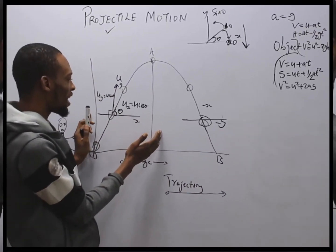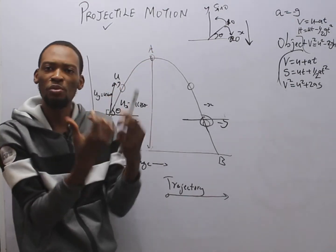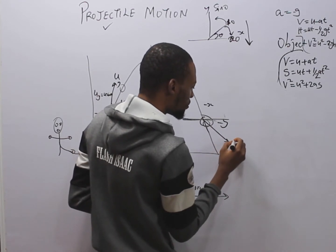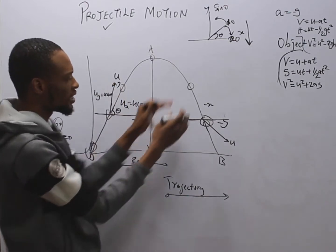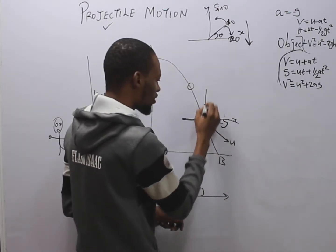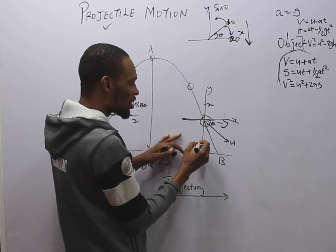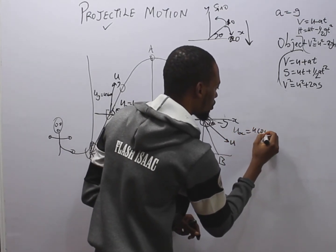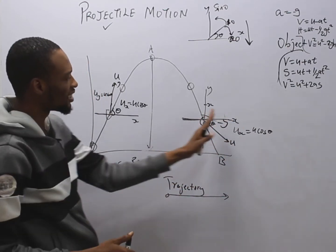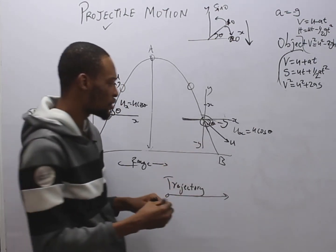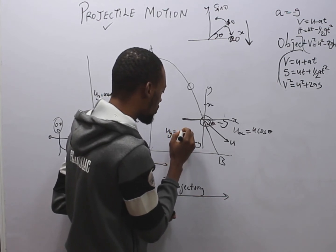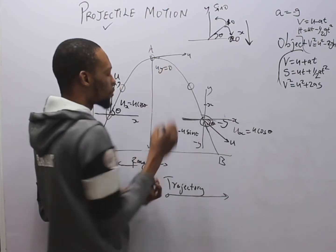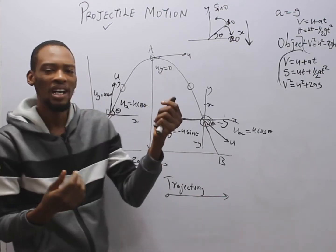The first part of the trajectory is the upward motion; the second part is the downward motion. As the body comes down, the velocity along the x-axis is u cos θ, and the component toward the negative y-axis is −u sin θ. At maximum height, the vertical component of velocity u_y equals zero, while the horizontal component remains u cos θ.